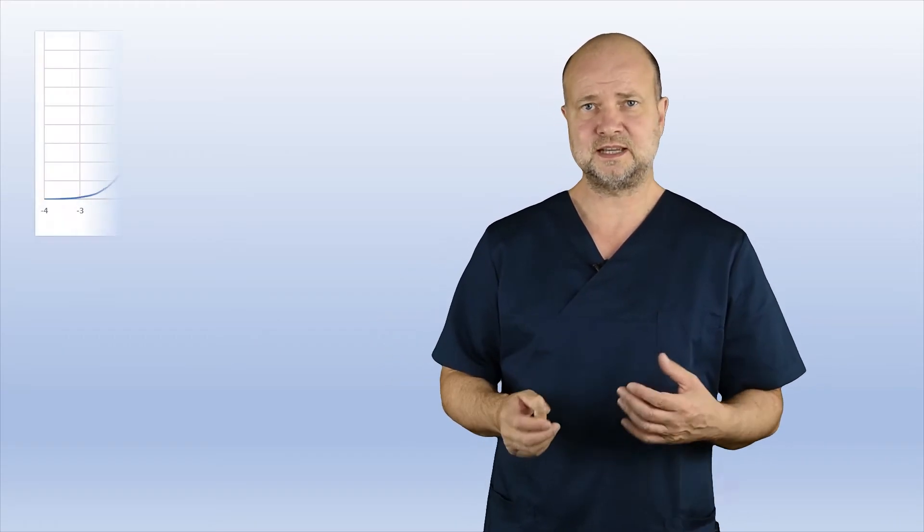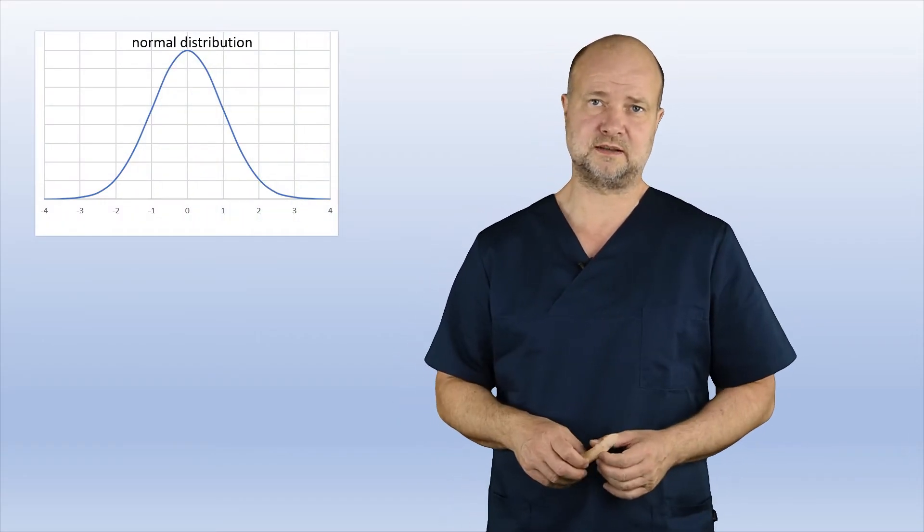So you have to look at normal distribution. If you take together all the men in one country and measure the penile lengths, you will find that most of them will gather around one number. This is the average number. And standard deviation is a measure of how far away from the average number you will get.